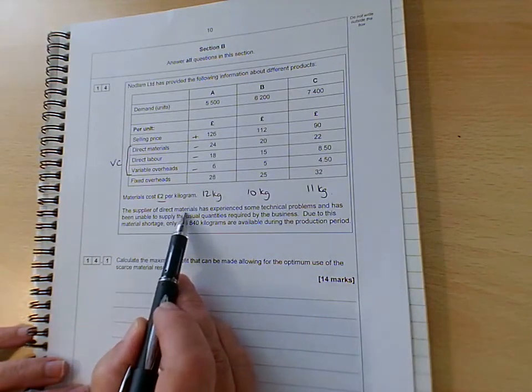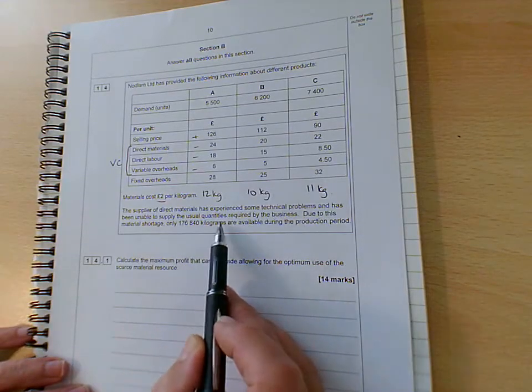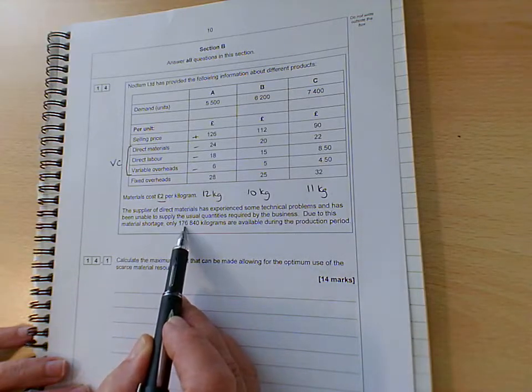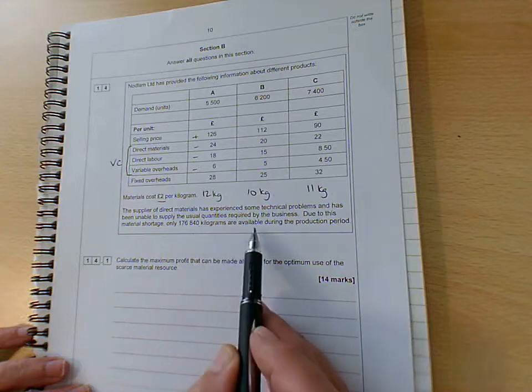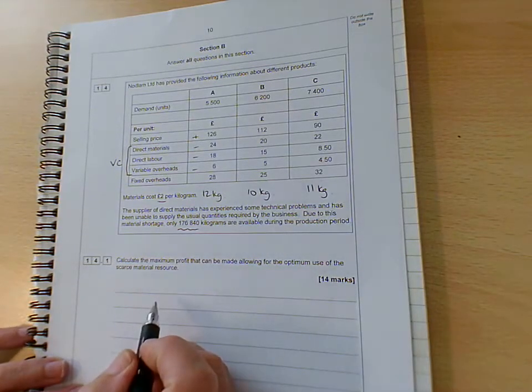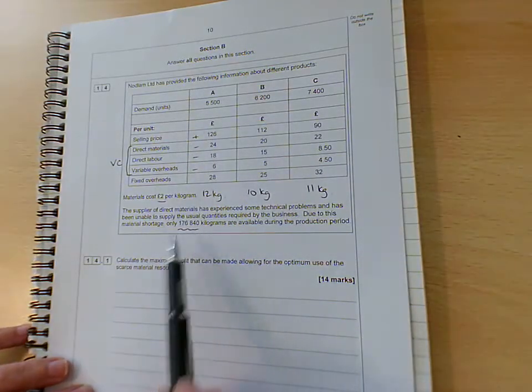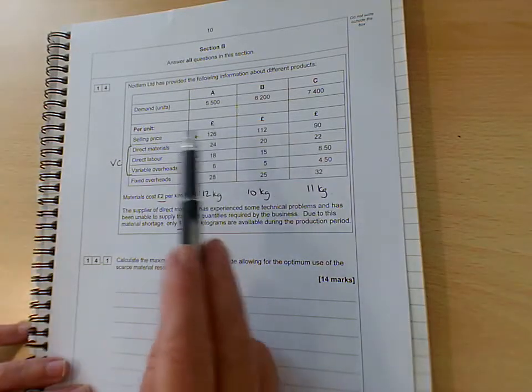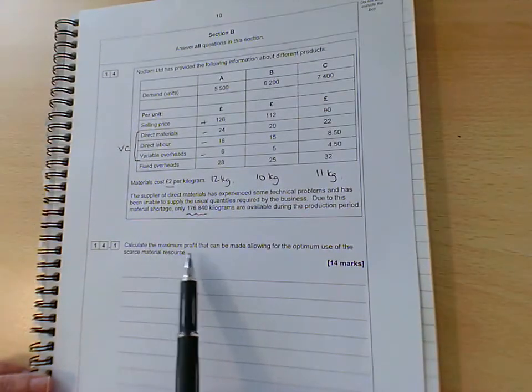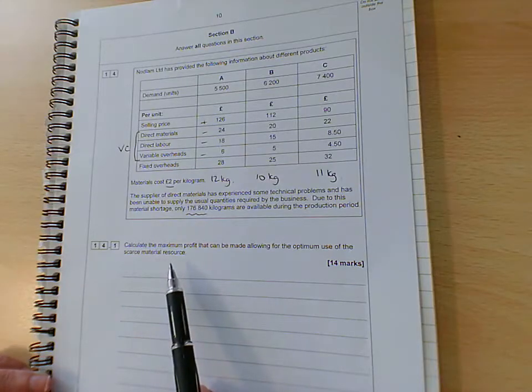So it tells us here that the supplier of direct materials has experienced some technical problems and has been unable to supply the usual quantities required by the business. Due to this material shortage, only 176,840 kilograms are available during the production period. So that's the maximum amount we've got available. Now we could work out exactly what will be needed, but there's no point. We'll take it as read that there isn't going to be enough materials to satisfy the full amount of demand. So it's asking us to calculate the maximum profit that can be made, allowing for the optimum use of the scarce material resource.